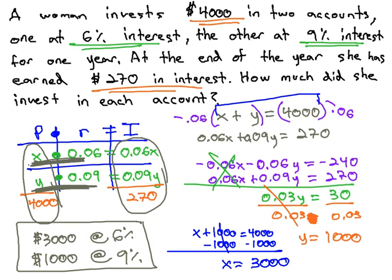We found those solutions by organizing our principal times our rate equaling the interest, identifying where the totals went, and using that to make our two equations with two unknowns, which we can solve for.